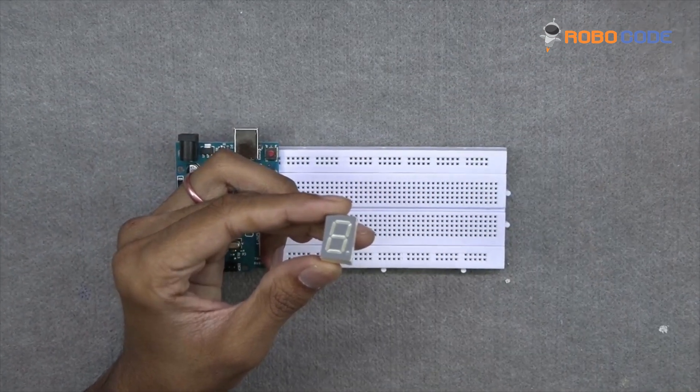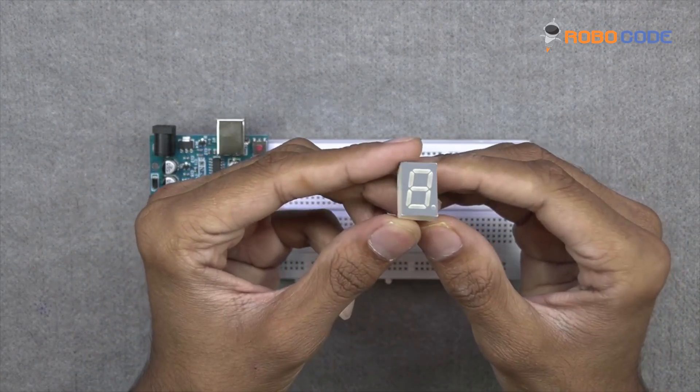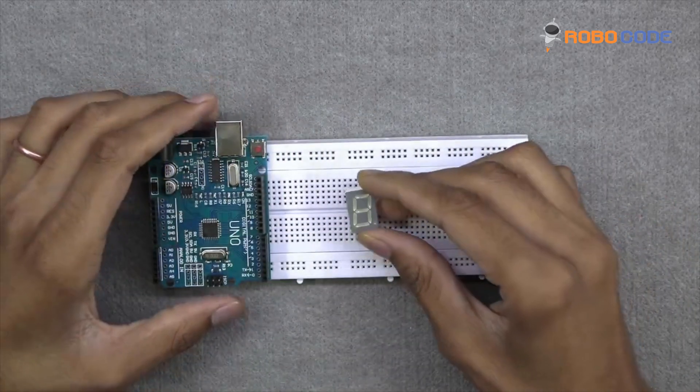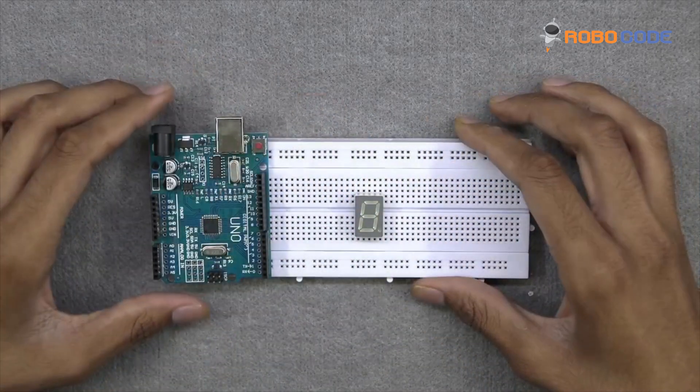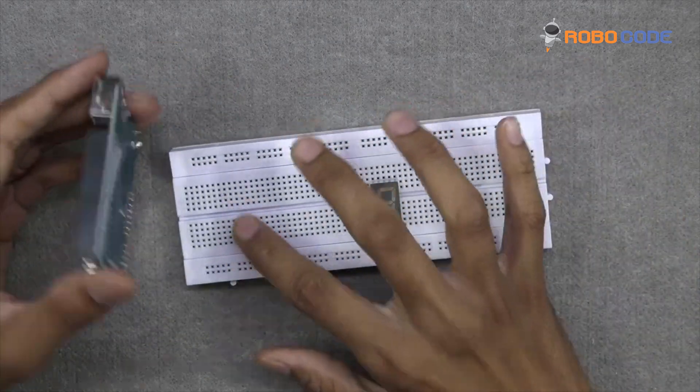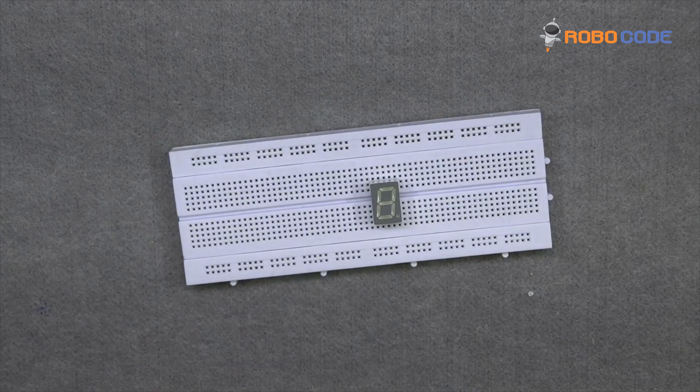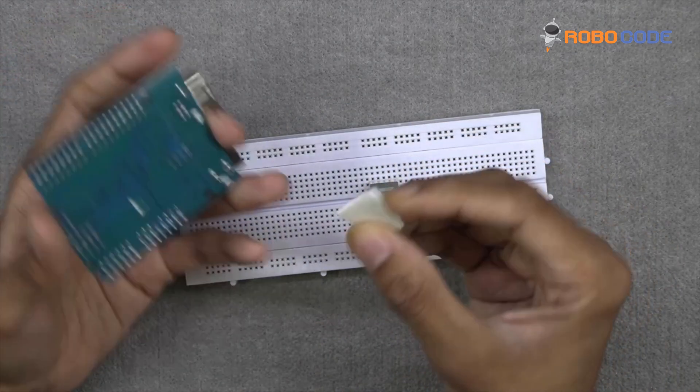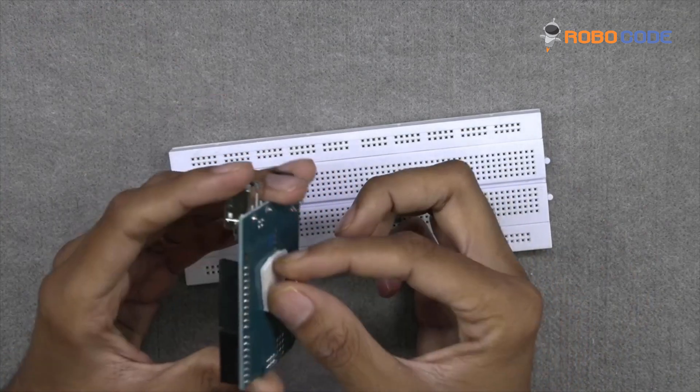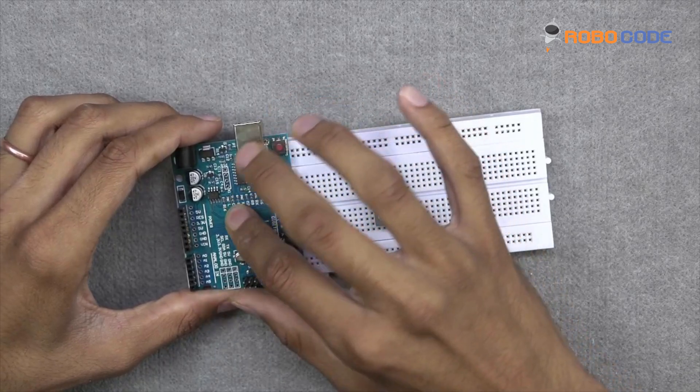We will take the 7-segment display and put it inside the breadboard as you can see in this video. Now we will take the Arduino board and stick it to the breadboard so it is easy to make the connections to the Arduino UNO board.